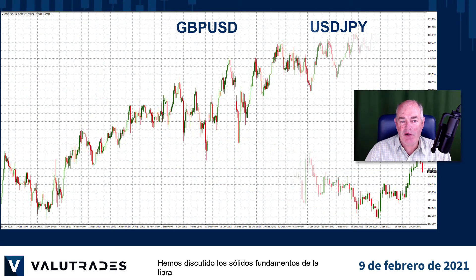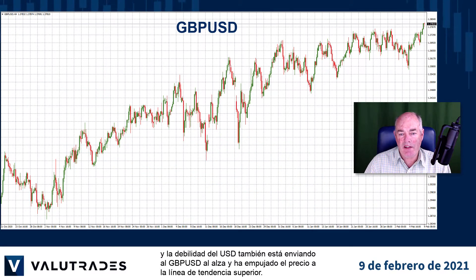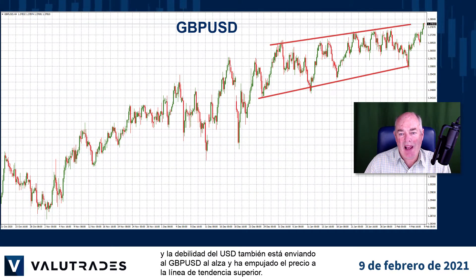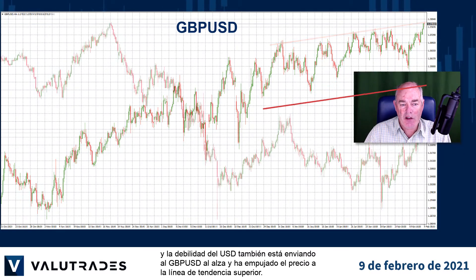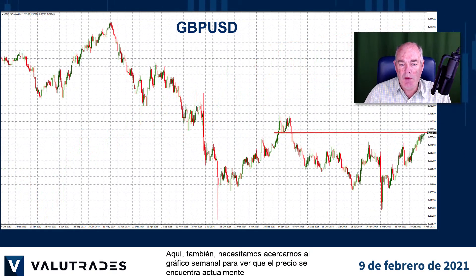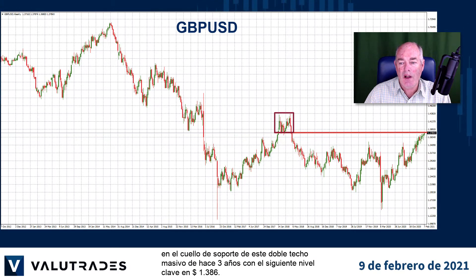We've discussed the strong fundamentals on the pound, and US dollar weakness is also sending GBPUSD higher, pushing price to the upper trend line. Here as well we need to zoom out to the weekly chart to see that price is currently at the support neckline of this massive double top from three years ago, with the next key level at 1.386.